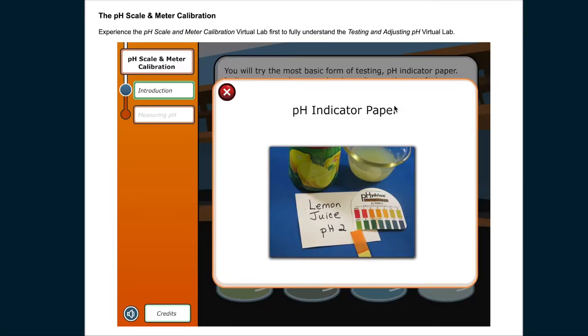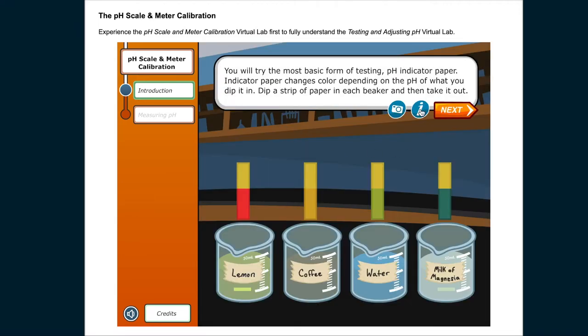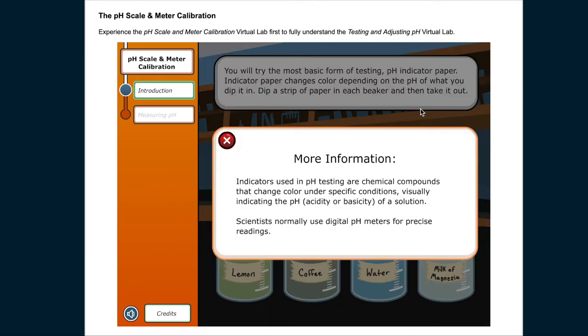pH indicator paper. Indicators used in pH testing are chemical compounds that change color under specific conditions, visually indicating the pH, acidity, or basicity of a solution.